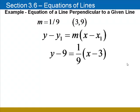Substitute into the point slope form: 9 for y1, the y coordinate, 1/9 for m, the slope, and 3 for x1, the x coordinate.